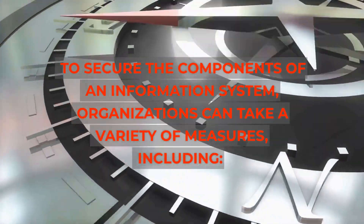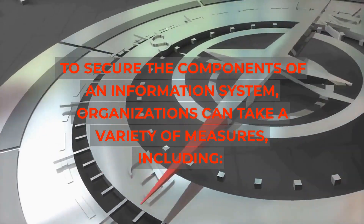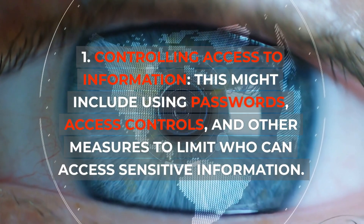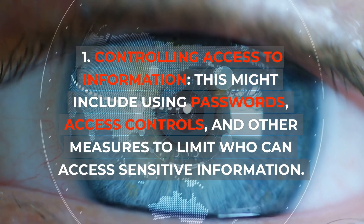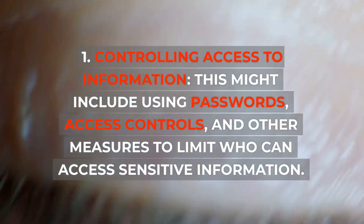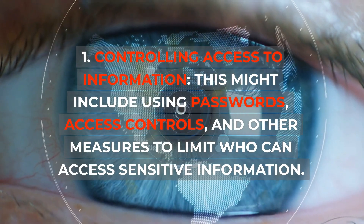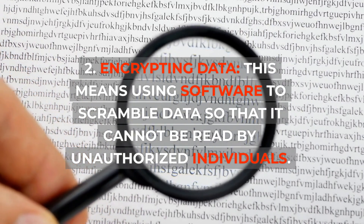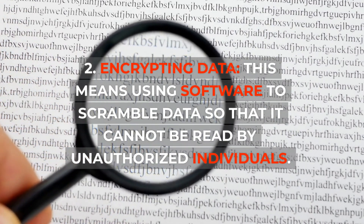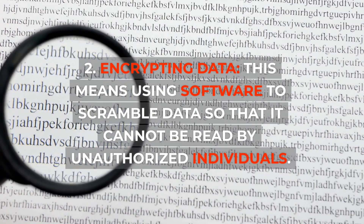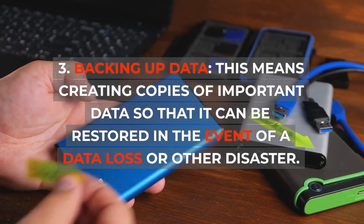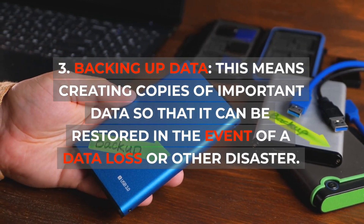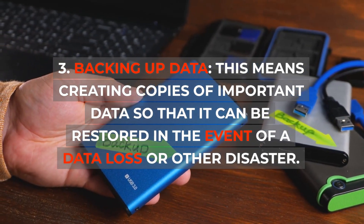To secure the components of an information system, organizations can take a variety of measures, including: 1. Controlling access to information, using passwords, access controls, and other measures to limit who can access sensitive information. 2. Encrypting data, using software to scramble data so that it cannot be read by unauthorized individuals. 3. Backing up data, creating copies of important data so that it can be restored in the event of data loss or disaster.